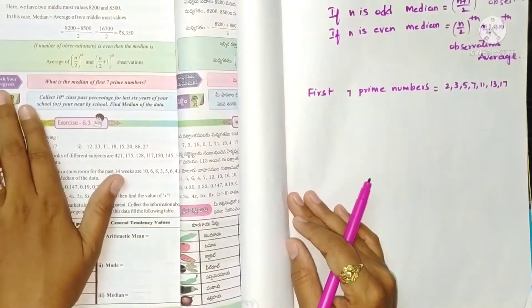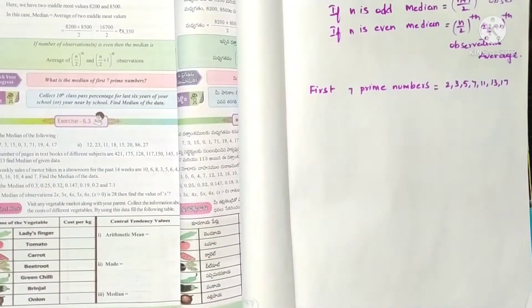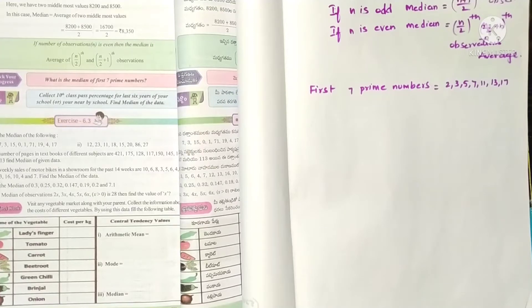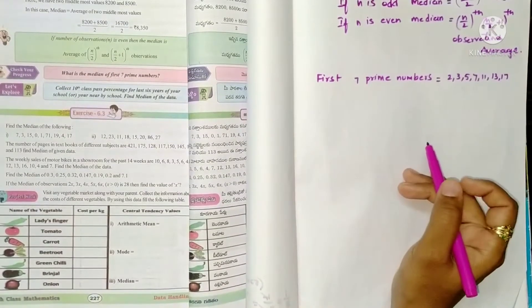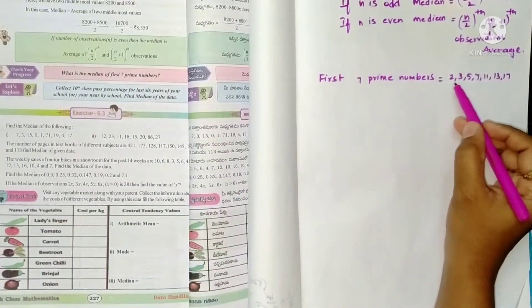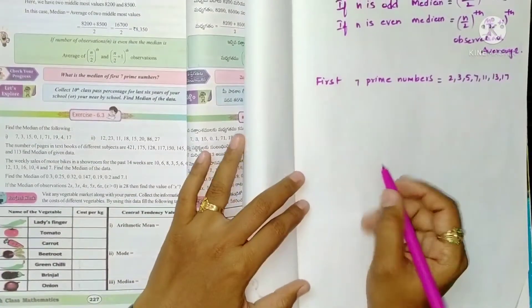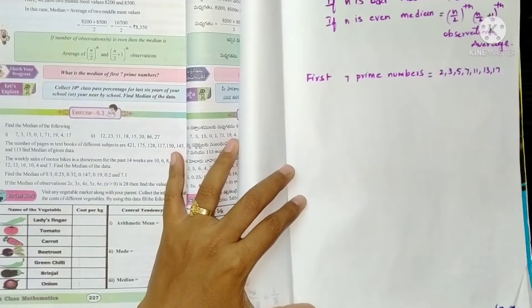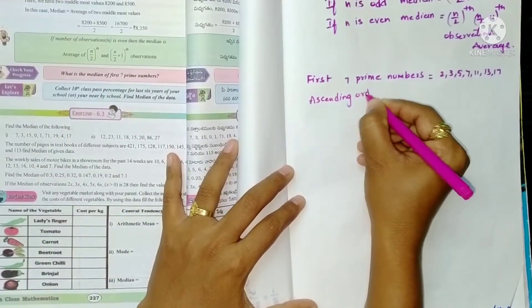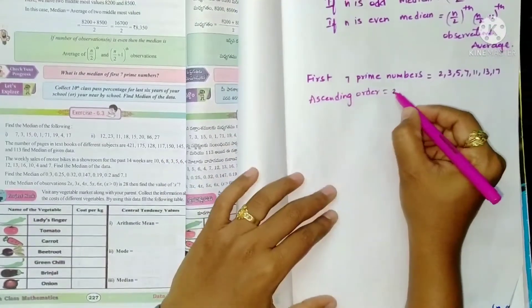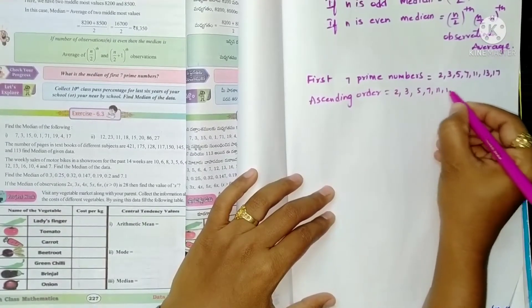Check your progress: what is the median of first seven prime numbers? Prime numbers are the numbers which have only two factors, that is one and the number itself. So first seven prime numbers are 2, 3, 5, 7, 11, 13, 17.